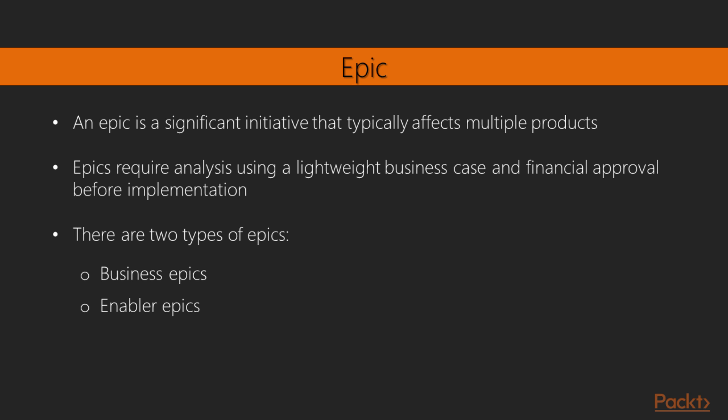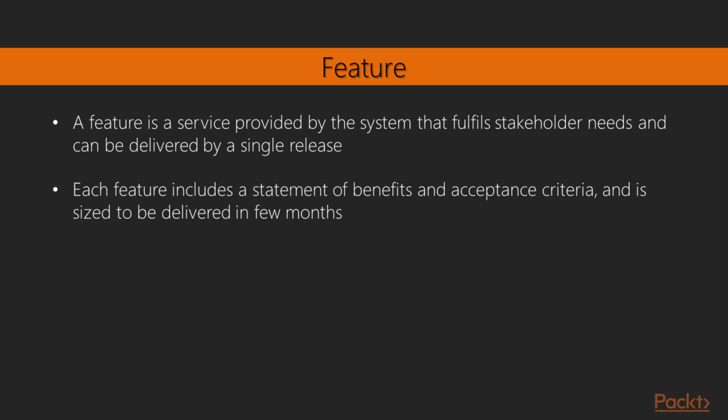Enabler EPICs are initiatives that do not deliver direct business value but are necessary to put the organization in a position to be successful for the Business EPICs — for example, the implementation of a cloud strategy. A feature is a service provided by the system that fulfills stakeholder needs and can be delivered by a single release. Each feature includes a statement of benefits and acceptance criteria, and is sized to be delivered in a few months. We can adopt text patterns such as 'In order to [goal], me as [who], deliver the benefit [I want / scope of the feature]' for describing the feature, as well as 'Given [context/condition], then [expected result]' for defining the exit criteria of the feature.